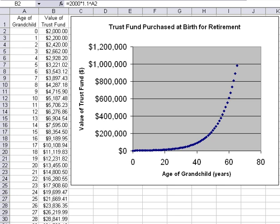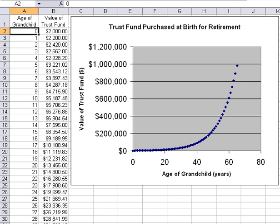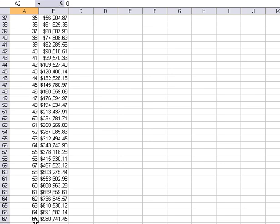Your grandparents decide to purchase for you a trust fund that you will get at retirement, and they're going to start off by putting $2,000 into this trust fund. You will not receive the money until you're 65, so you get $2,000 into a trust fund when you're born — where the age of the grandchild is zero — and you will be given the money finally when you're 65.